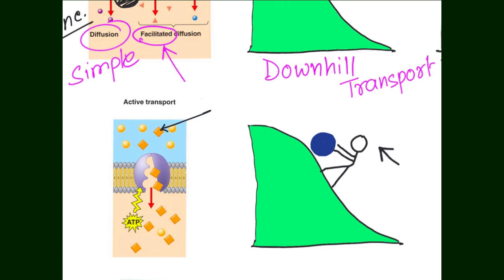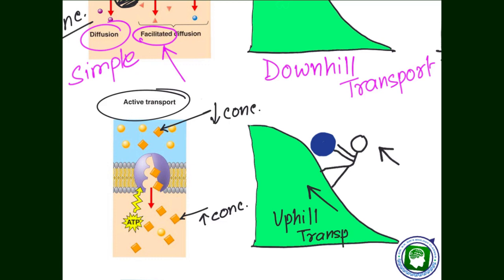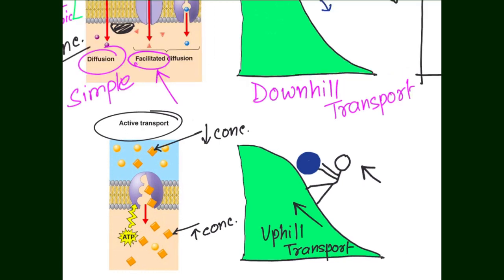The movement of substances from a lower concentrated region to a higher concentrated region, forcefully with the help of ATP, is referred to as active transport. It is an uphill type of transport, and the protein involved in it is called a pump protein.